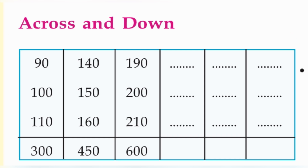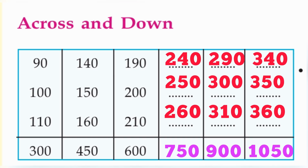The next activity: across and down. Here is also a pattern. The first row: 90, 140, 190 — 50 is increasing each time. So we continue: 240, 290, and 340. The second row: 100, 150, 200 — also increasing by 50. So: 250, 300, and 350. The third row: 110, 160, 210 — the same increase of 50. So the answers are 260, 310, and 360.